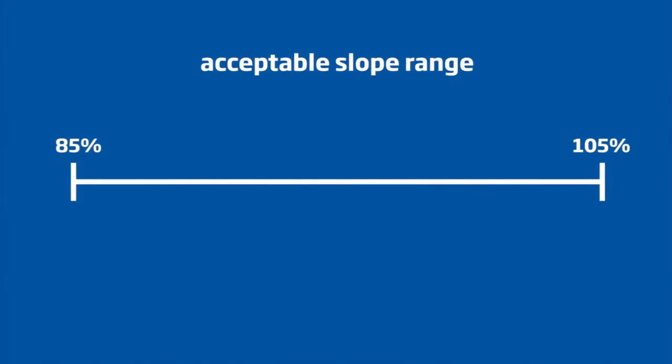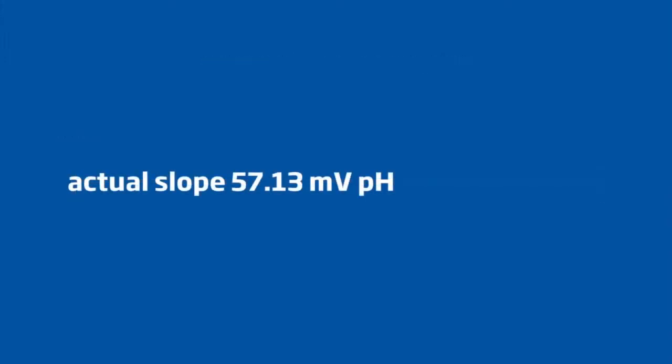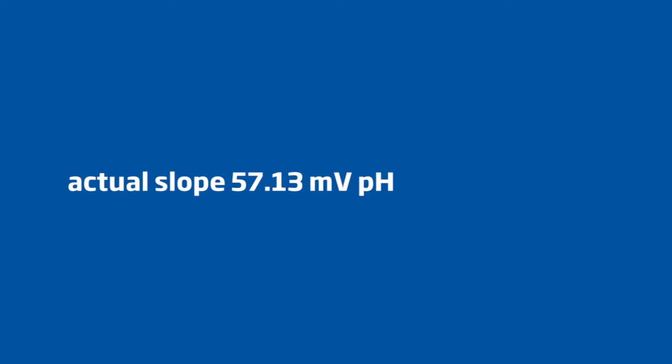The final step for determining the condition of your electrode is to make sure that these values produce an acceptable slope range. The acceptable range for a good electrode is between 85 and 105% slope. The slope of our electrode comes out to 57.13 millivolt per pH unit change.